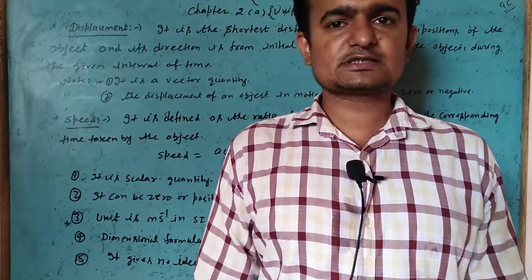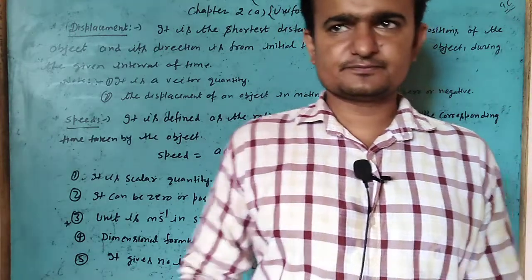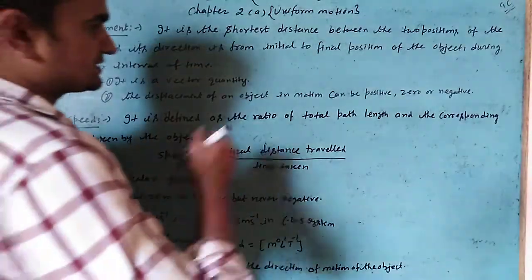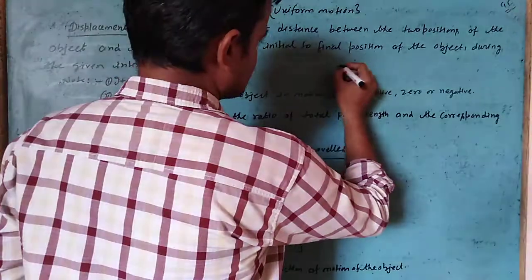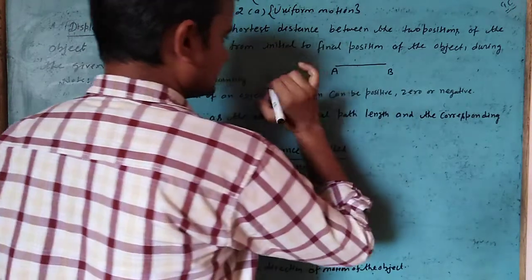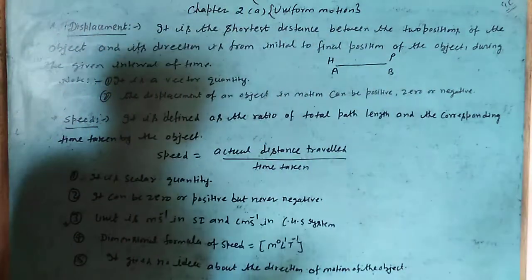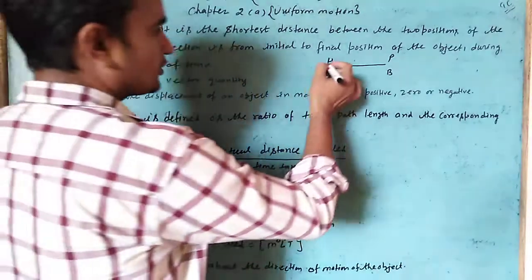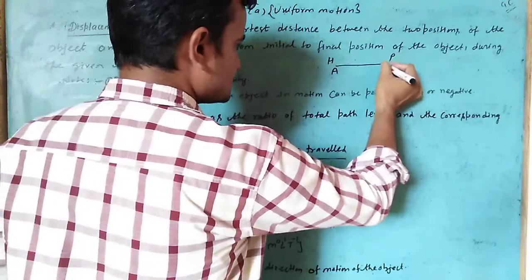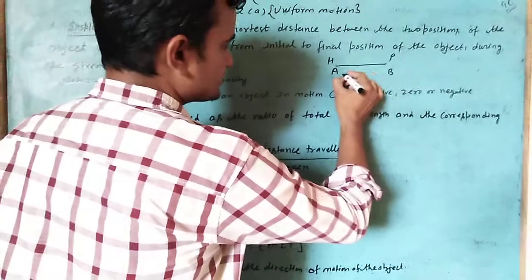Good morning. Today we'll discuss the topic of displacement in Class 11 Physics. Displacement — consider two points: the initial position and the final position. The initial position is where the object starts, and the final position is where it ends. Displacement is the shortest distance between these two positions.